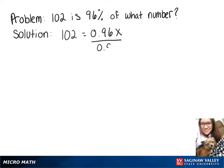Solve for x — we'll divide both sides by .96. And 102 divided by .96 gives us our solution: 106.25.